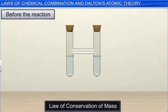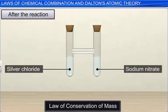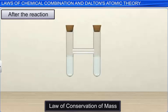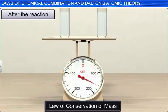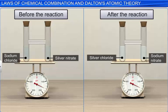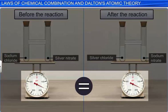Now, tilt the tube to mix the solutions thoroughly. Reaction takes place and we notice that a white precipitate of silver chloride is formed in the tube along with sodium nitrate solution. Let's weigh the tube after the reaction. We observe that the weight remains the same.